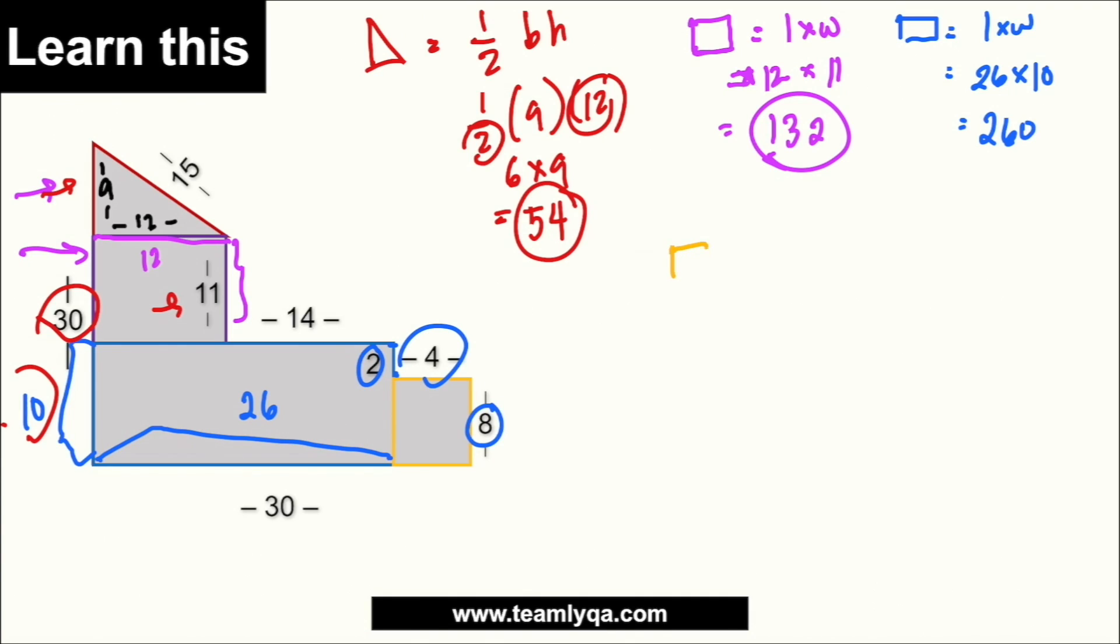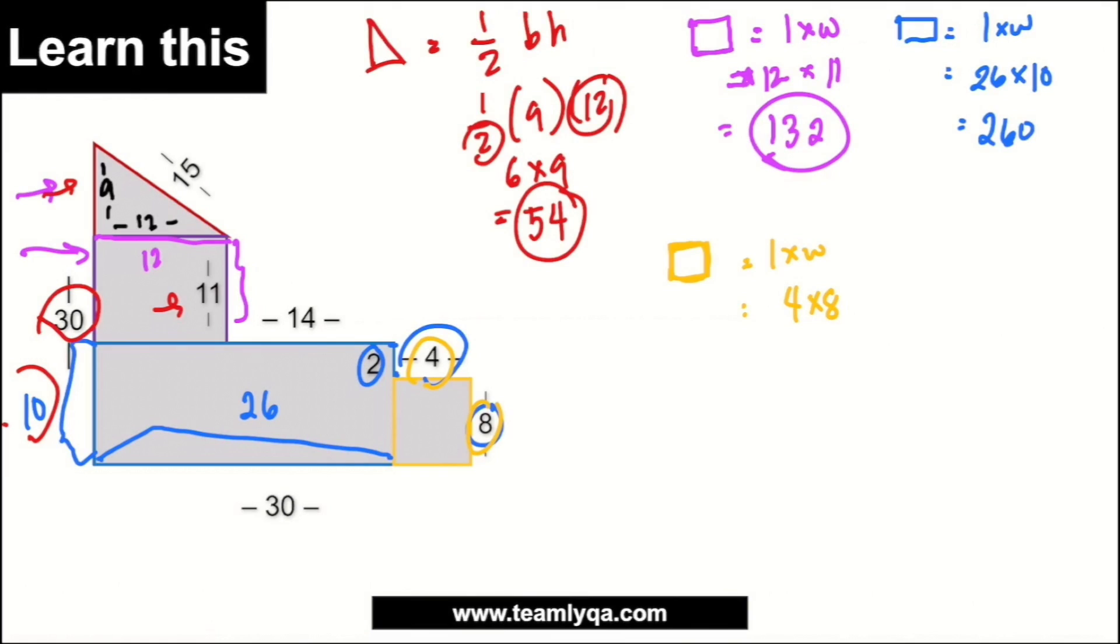Doon na tayo ngayon sa isa pa nating parallelogram, yung yellow. Length times width, meron tayong 4, tsaka 8. So, 4 times 8 lang. So, that will be 32.